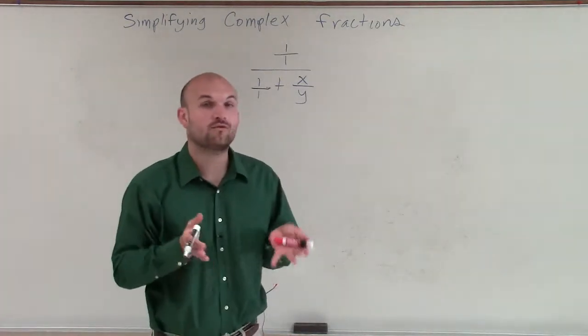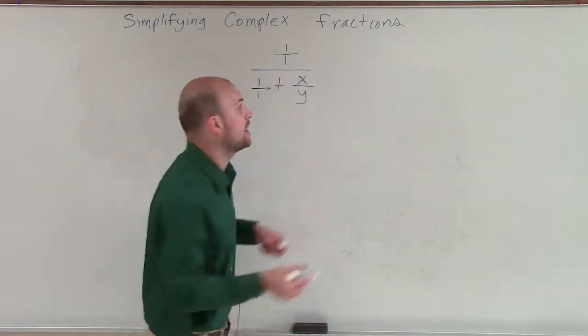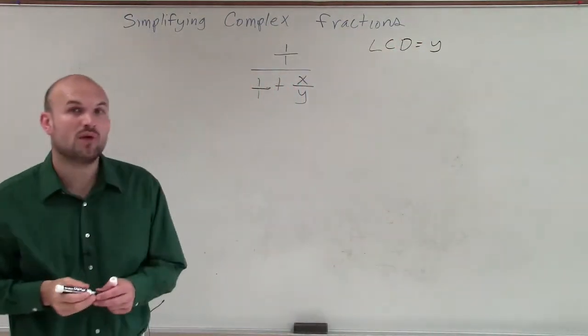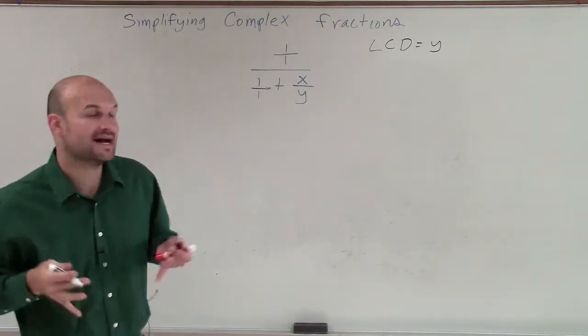So what we can do is out of 1, 1, and y, our LCD is going to equal y. So then what we'll do is we'll multiply every single term times y.